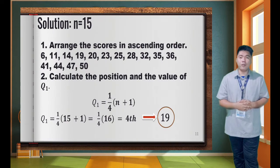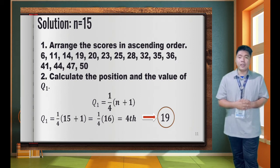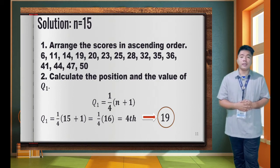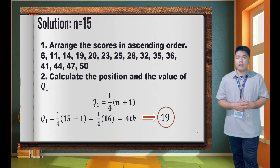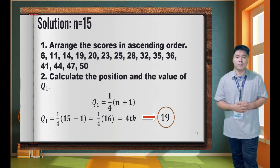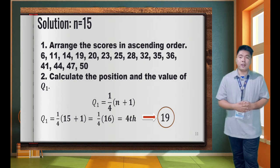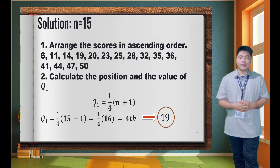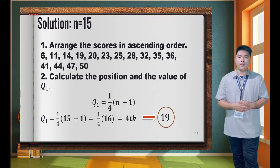Let's proceed with our solution. Counting the data, we have N = 15. Step 1: arrange the scores in ascending order. The arrangement is: 6, 11, 14, 19, 20, 23, 25, 28, 32, 35, 36, 41, 44, 47, and 50.